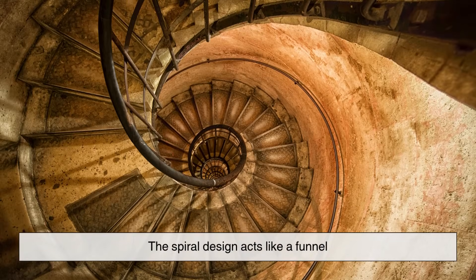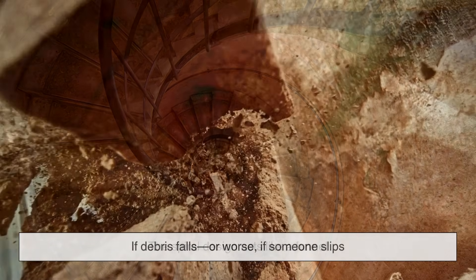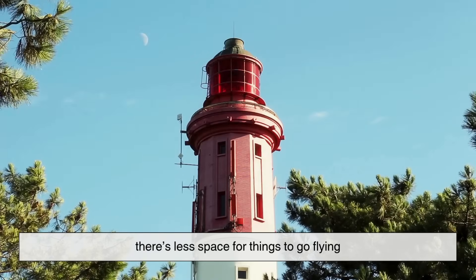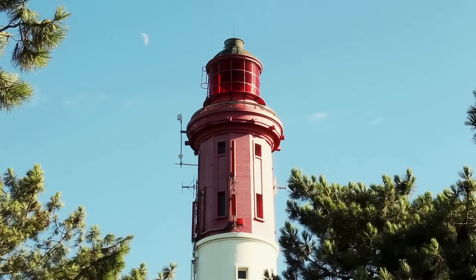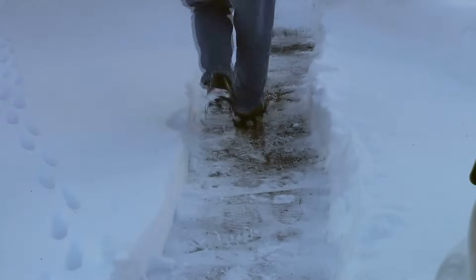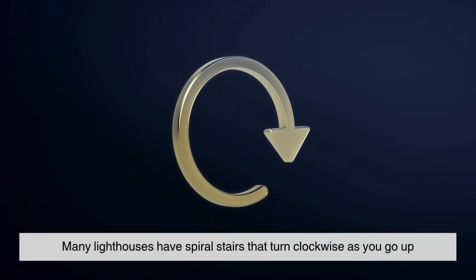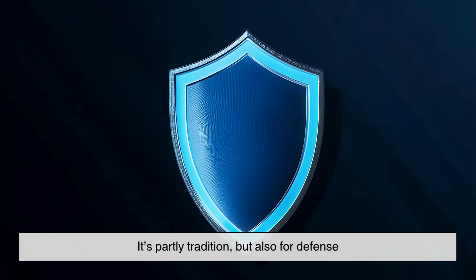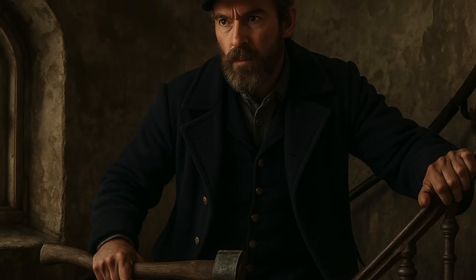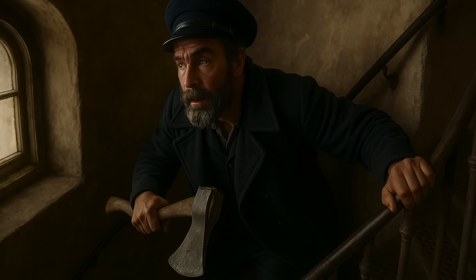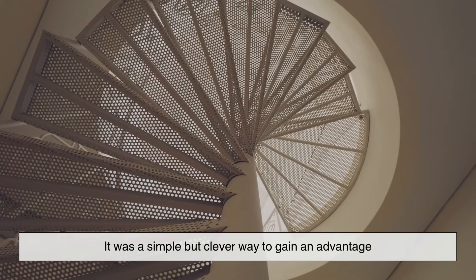Also, the spiral design acts like a funnel. If debris falls, or worse, if someone slips, there's less space for things to go flying. The walls keep things contained. You can't tumble straight down like you could with a wide open stairwell. Here's another layer. Many lighthouses have spiral stairs that turn clockwise as you go up. It's partly tradition, but also for defense. A right-handed person coming down had more room to swing a weapon, while an attacker going up was cramped against the inner wall. It was a simple but clever way to gain an advantage.